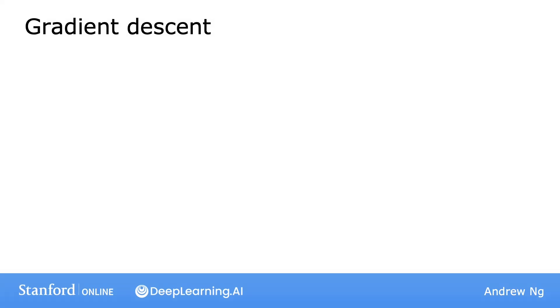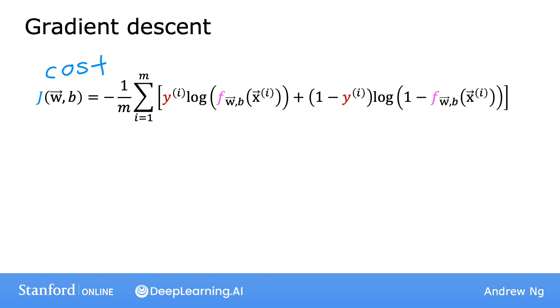The algorithm you can use to minimize the cost function is gradient descent. Here again is the cost function. And so if you want to minimize the cost j as a function of w and b, here's the usual gradient descent algorithm, where you repeatedly update each parameter as the old value minus alpha, the learning rate, times this derivative term.